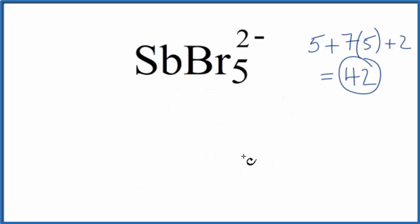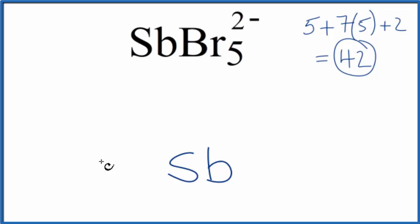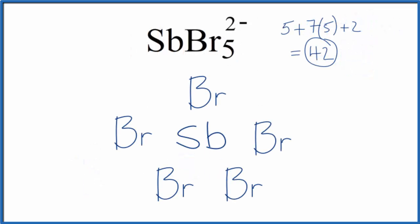We'll put the least electronegative element in the center, that's the Sb, then we'll put bromine atoms around it. We'll put pairs of electrons between atoms that'll form the chemical bonds. You'll note that Sb has more than 8, that's okay, it can have an expanded octet.